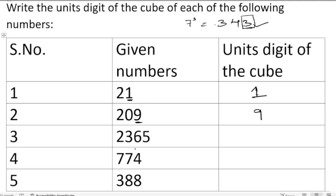Next, 2365. Here in the units digit we are having 5, so the cube of 5 is 125. We will get the units digit as 5.